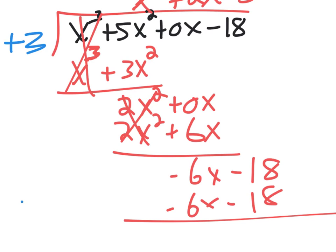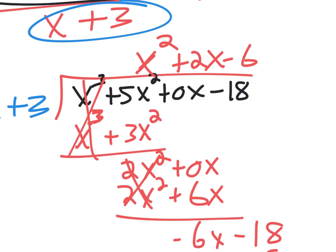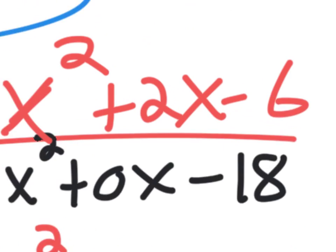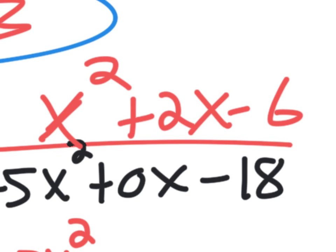And when you subtract them, subtract them by negative makes it an addition. So negative 6x plus 6x is gone. Negative 18 minus negative 18 is gone. We're at our final answer right here in red. X squared plus 2x minus 6.